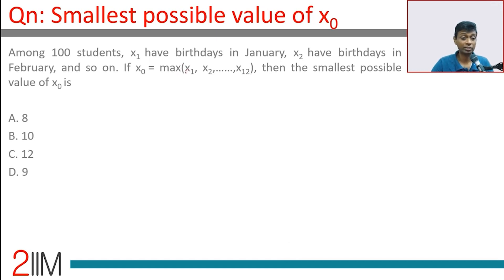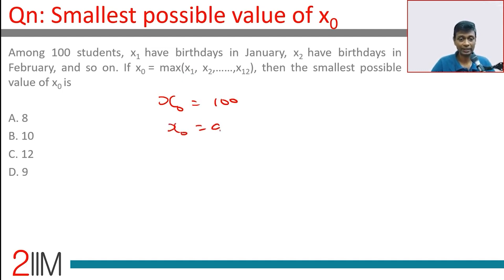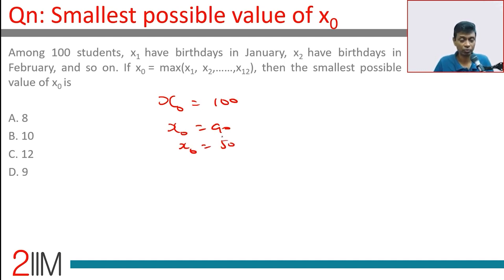All 100 could have birthdays in January, so x0 could be 100. Technically speaking, x0 could be 90, or x0 could be 50 with 50 people in January and the others distributed. We want to find the smallest possible x0.